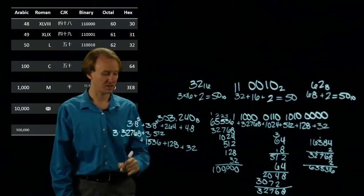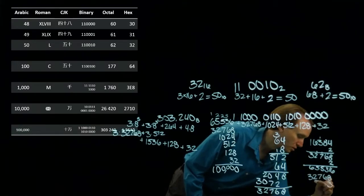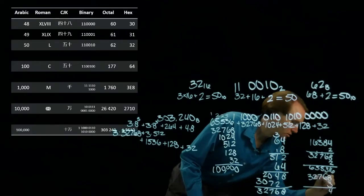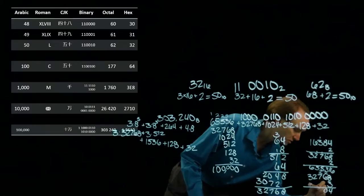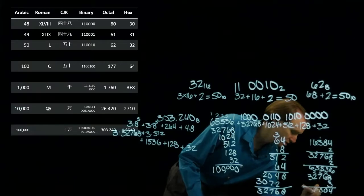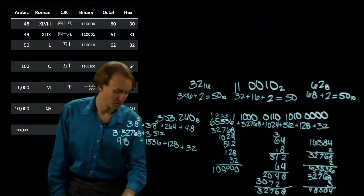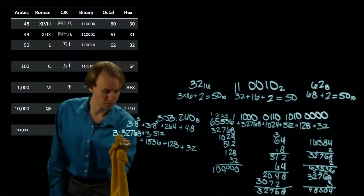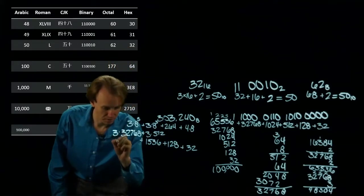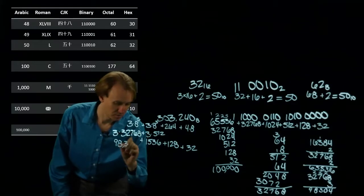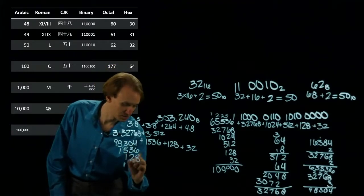Then I've got the 3 times 32768. So if I write that over here. 3 times 8 is 24. 3 times 6 is 18 plus 2 gives me 20. 3 times 7 is 21, 2 is 23. 3 times 2 is 6 plus 2 is 8. And 3 times 3 is 9. So now I have 98,304, adding 15, 36, 128, and 32 together.